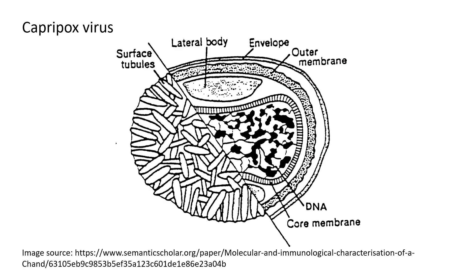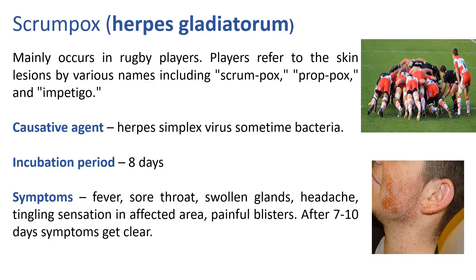Here is the structure of Capripox virus, which has DNA as genetic material, a core, outer membrane, rough surface, and envelope. Scrum pox, also known as herpes gladiatorum, mainly occurs in rugby players who form a scrum during play and their faces come into contact with each other, resulting in skin lesions.